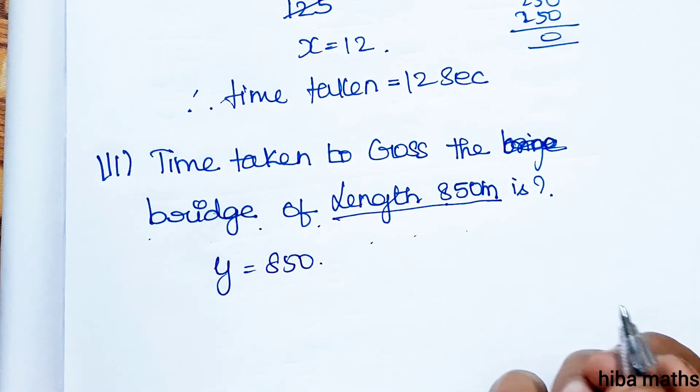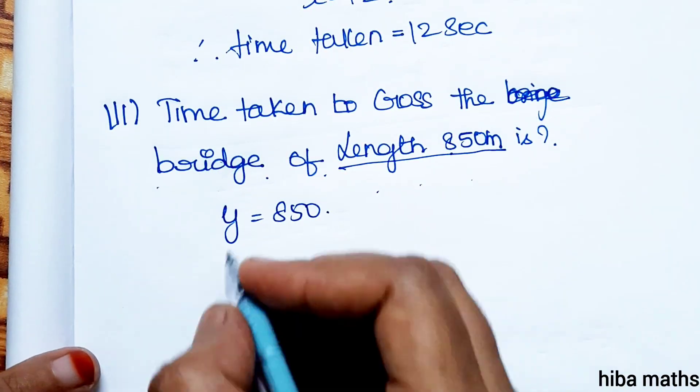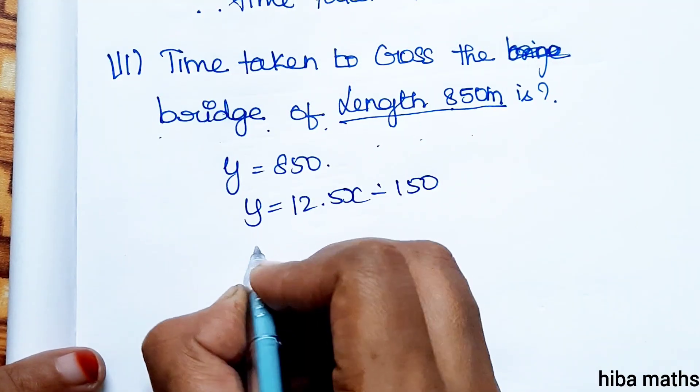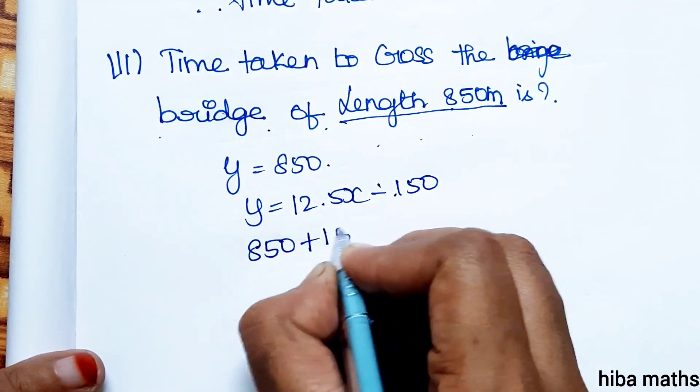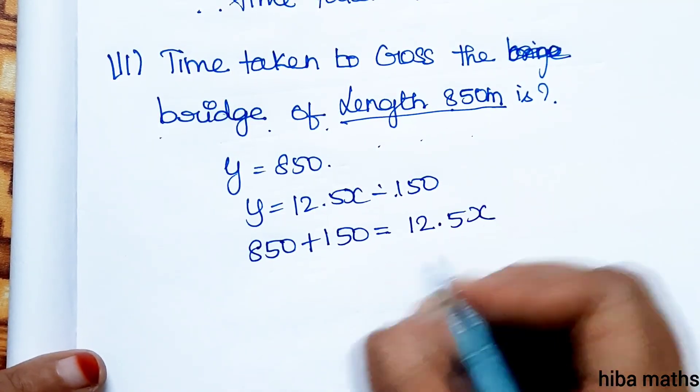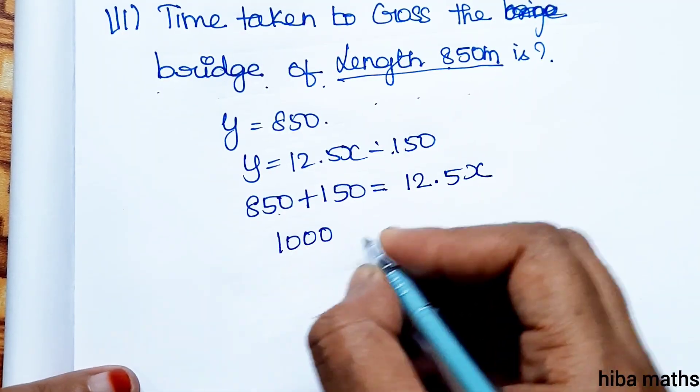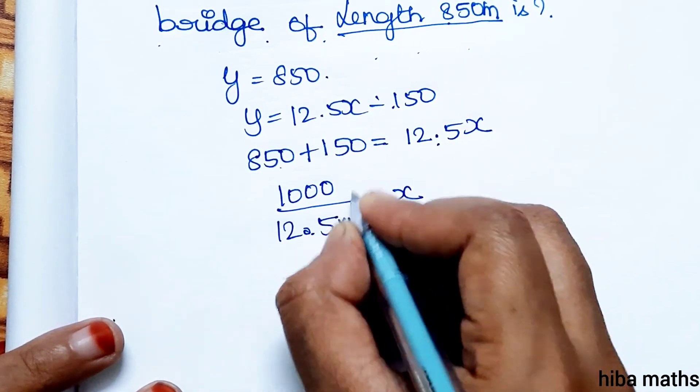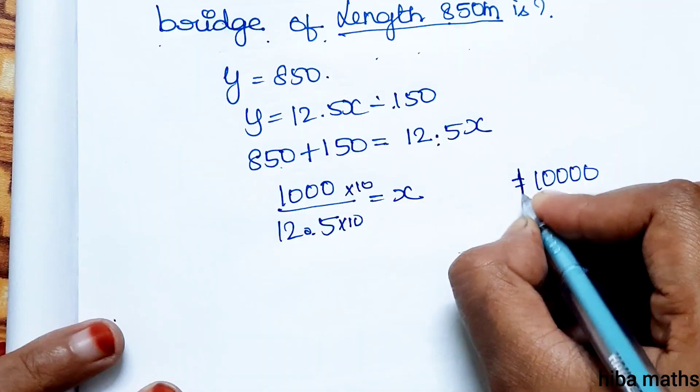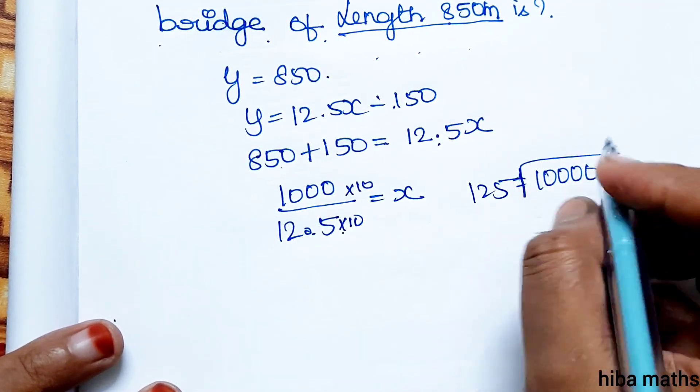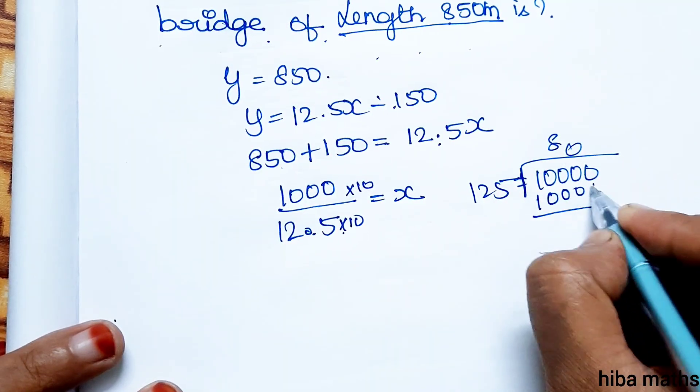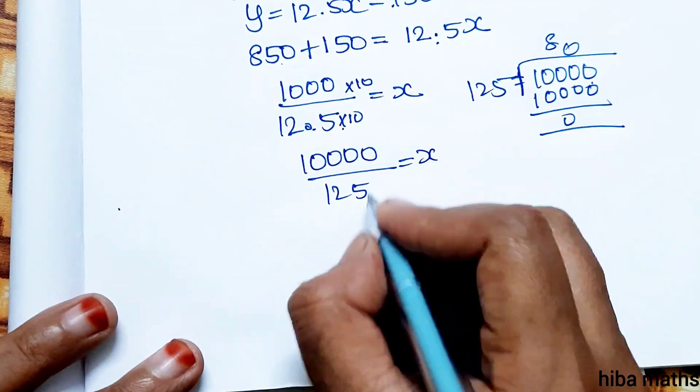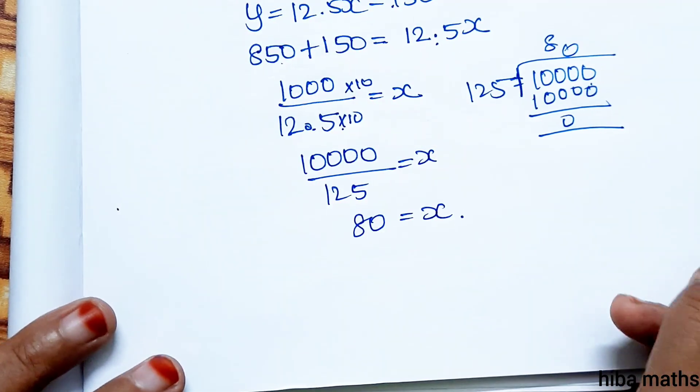So y is equal to 850. y = 12.5x - 150. y = 850. 850 plus 150 = 12.5x. 1000 divided by 12.5 = x. Removing decimal by multiplying by 10 into 10: 10,000 divided by 125 is equal to x. Canceling: answer is 80 is equal to x.